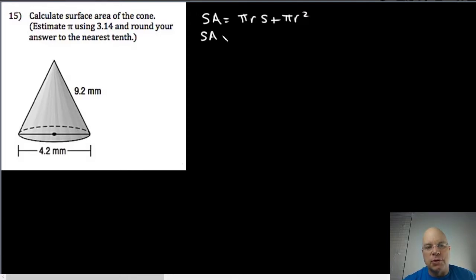Substituting into that formula using 3.14 according to the directions, we get surface area approximately 3.14 multiplied by—the 4.2 is the diameter, so I want half of that for the radius, 2.1—multiplied by the slant height, which is 9.2, plus 3.14 multiplied by 2.1 squared. You can use a calculator for this.